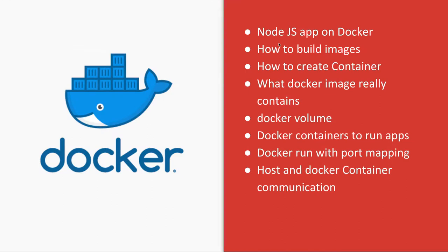We'll cover a Node.js app on Docker — how to build images, how to create containers from images, what a Docker image really contains. We'll look at the minimal Linux kernel, the file system, different directories, Docker volumes, and Docker containers. The final objective is to run an application — specifically Nginx — on a Docker container, and do port mapping between the host operating system and the container.